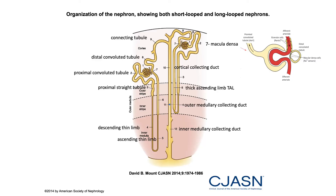I'd like to spend some time on renal anatomy. We really need to know the nephron because we're going to mention these parts again and again. On your screen we have a picture of two nephrons — some are short loop, the one to the left, and some are long loop, the one to the right. As you can see, in the kidney we have the cortex where the glomeruli are, and then we have the medulla — with the inner medulla and the outer medulla — all clearly depicted on your screen.